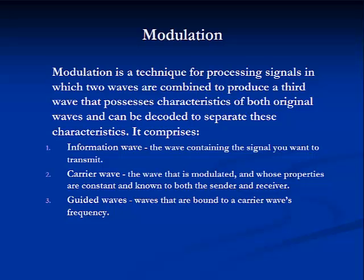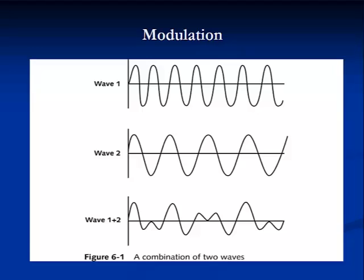For example, in the case of an FM radio, the predetermined carrier wave may have a frequency of 88.3 FM. If your favorite radio station is 88.3 FM, you can always tune your radio to the carrier wave's frequency and rely on your radio to interpret the information wave's signal for the news or music. Let's look at these three modulation waves graphically. Here is an illustration of the encoding-decoding signal processing technique using modulation. Note that wave 1 is the information wave, wave 2 is the carrier wave, and wave 3 is the combination of waves 1 and 2.